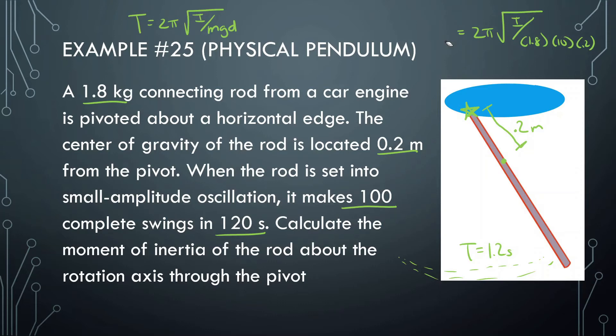Plugging in T = 1.2 seconds, we solve for I: I = (T / 2π)² × m × g × d = (1.2 / 2π)² × 1.8 × 10 × 0.2. We get an inertia of 0.13 kg·m².